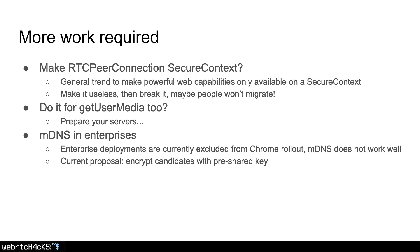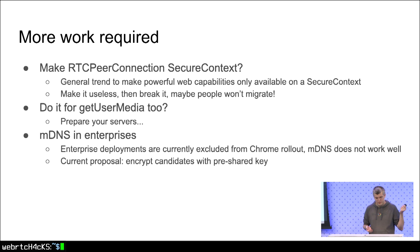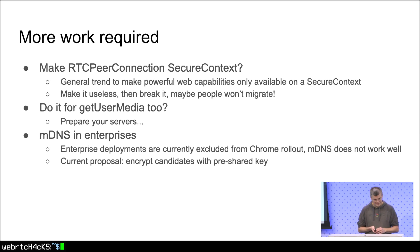There's a lot more work required. A lot of the usage is on HTTP, and there's a general trend to only make powerful web APIs like WebRTC available on secure contexts like HTTPS. getUserMedia is only available there already, so removing WebRTC on HTTP won't break much. The hope is that if you first make it useless and then break it, people won't migrate. We will probably try to do it for getUserMedia as well, because it doesn't make sense to couple camera permission with access to your IP address — it's just the convenient prompt we have these days. Enterprise deployments are currently excluded because mDNS doesn't work well there, and there's a current proposal to encrypt these candidates using a pre-shared key available in the enterprise Chrome configuration.